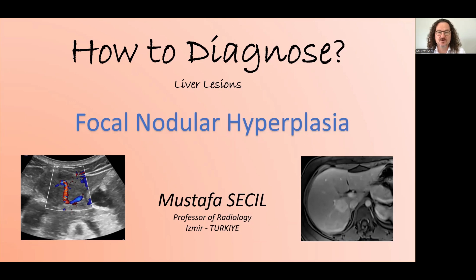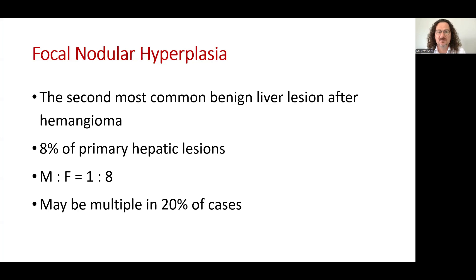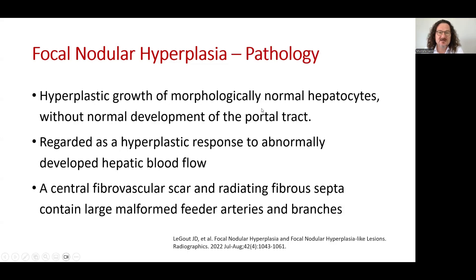This presentation will be about how to diagnose focal nodular hyperplasia. Focal nodular hyperplasia is the second most common benign liver lesion after hemangioma. It constitutes 8% of primary hepatic lesions. It has a predominance for females and may be multiple in 20% of cases. It is a hyperplastic growth of morphologically normal hepatocytes, regarded as a hyperplastic response to abnormally developed hepatic blood flow. It has a central fibrovascular scar and radiating fibroseptal containing large malformed feeder arteries and branches.